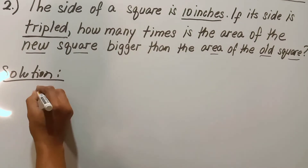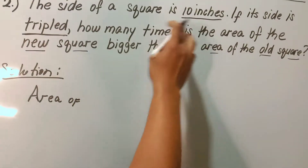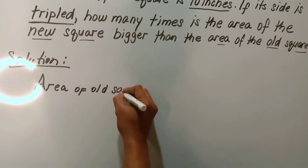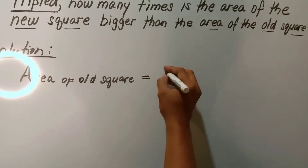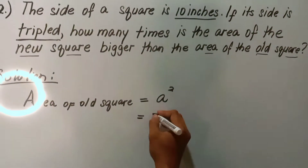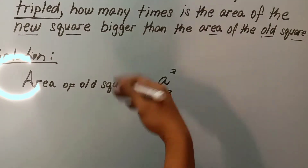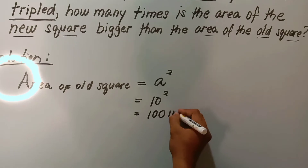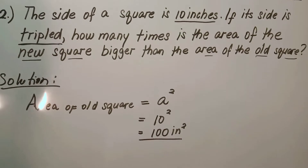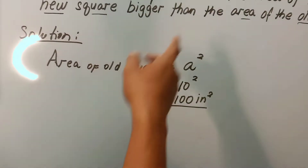Solution: Area of the old square equals a squared, which equals 10 inches squared. 10 times 10 equals 100 square inches. Next, we need to find the area of the new square, since it is required in order to find the number of times between these two areas — how much bigger.